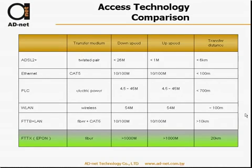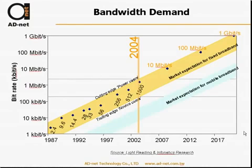Looking at the access technology comparison, you can see that FTTX — fiber to the home — provides more than one gigabit per user, giving plenty of room for growth. According to sources from Light Reading and Infonetics Research, by 2012 every customer will already need 100 megabits at home, meaning your network must be fully prepared for bandwidth demand growth.